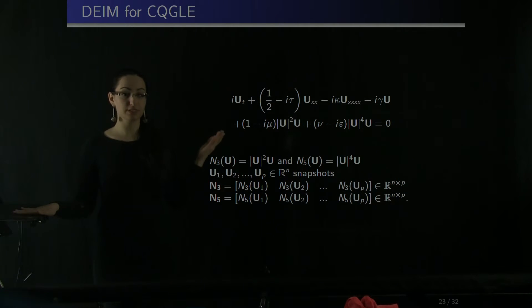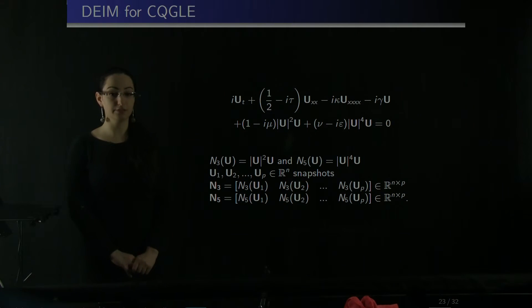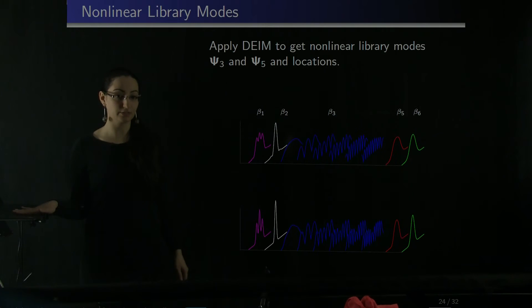Recall that we're trying to collect sparse measurements, classify them, which means find the parameter regime that this measurement is in, then reconstruct the full solution, and then predict the future behavior. From this equation you see that there are two nonlinear terms, cubic term and quintic term, and each of these terms multiplied with a parameter. So we decided to split this nonlinearity into two parts and then construct the basis for them separately. That's why we built nonlinear snapshot matrix for cubic term and quintic term. Then we applied the singular value decomposition to get the nonlinear library mode. This is the cubic library mode, this is quintic library mode. You see that they are very similar to each other for each regime. However, library modes for quintic terms are stiffer than those for the cubic term.